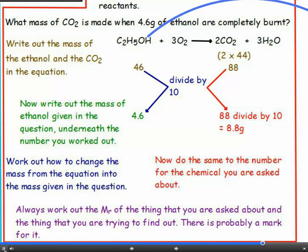The other chemical in the question is the carbon dioxide. There are two lots of carbon dioxide in the equation. The MR of carbon dioxide is 44, so we put in two lots of 44, which is 88 underneath the equation. Write out the mass given in the question underneath the right chemical. In this case, 4.6 underneath the ethanol.